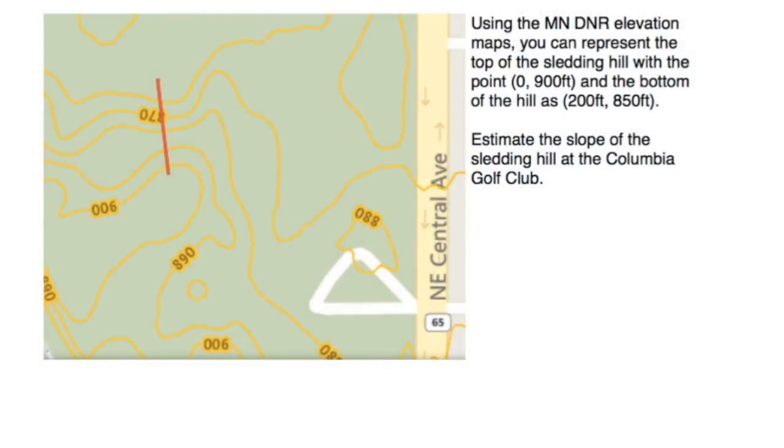Maybe you're familiar with this sledding hill. It's at the Columbia Golf Club on Central Avenue here in Minneapolis. It's just behind the clubhouse. Using the Minnesota DNR elevation maps on the internet, you can represent the top of the sledding hill with the point (0, 900 feet) and the bottom of the hill is (200 feet, 850 feet). Estimate the slope of the sledding hill at the Columbia Golf Club.